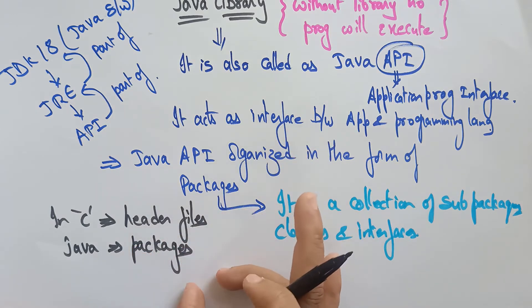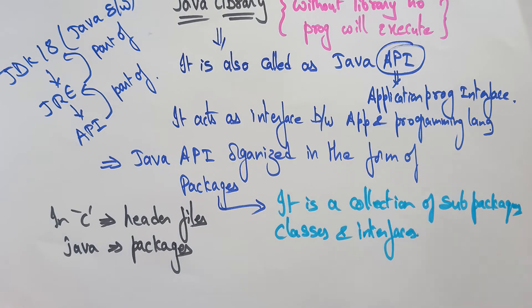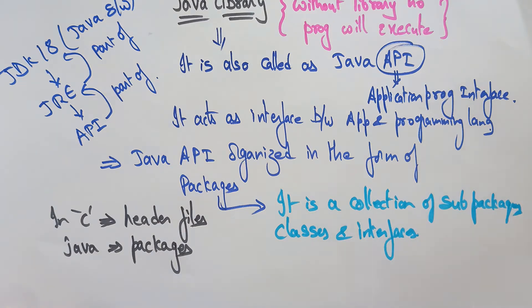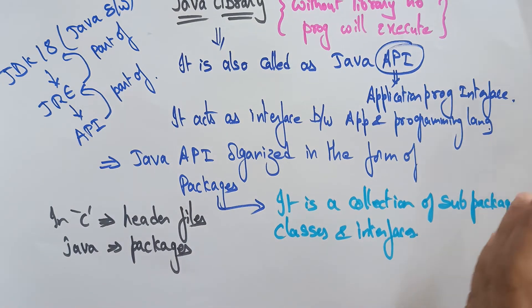Header files and packages are the same concept. In header files, each function has its own header file — input/output functions have one header file, string functions have another. In Java we call these header files as packages. For addition of two numbers there is a library function, for finding maximum there is a library function — you don't need to write anything yourself. Previously in C you had to write a+b, a*b, but in Java you just call the library function and the operation is performed.